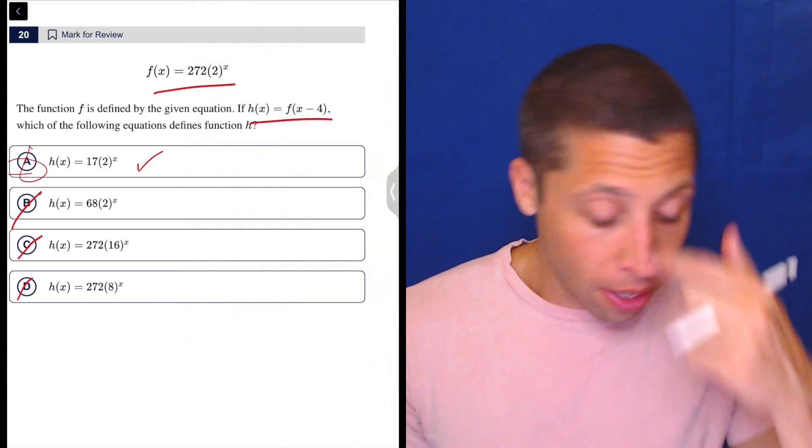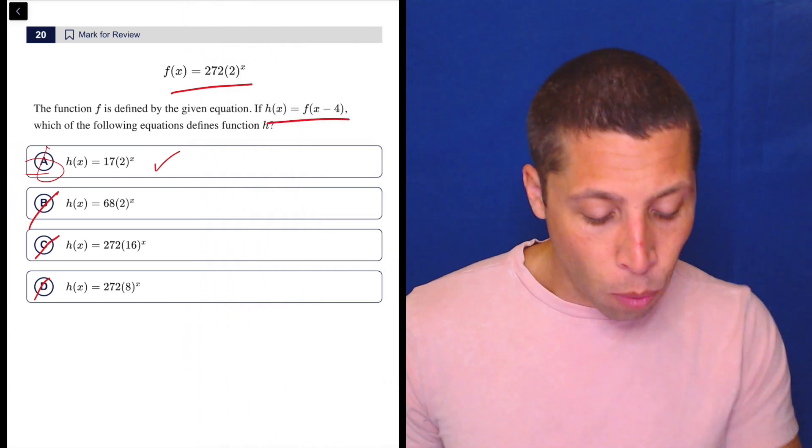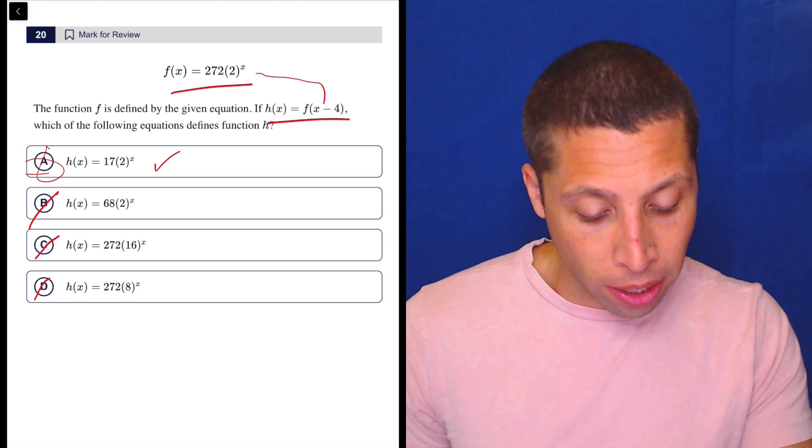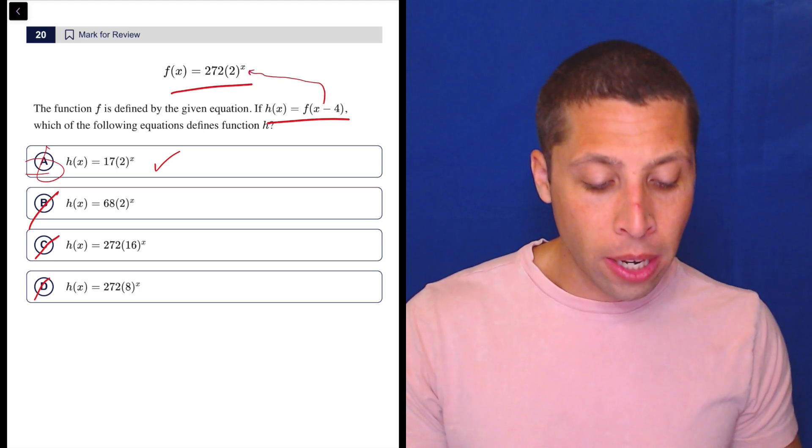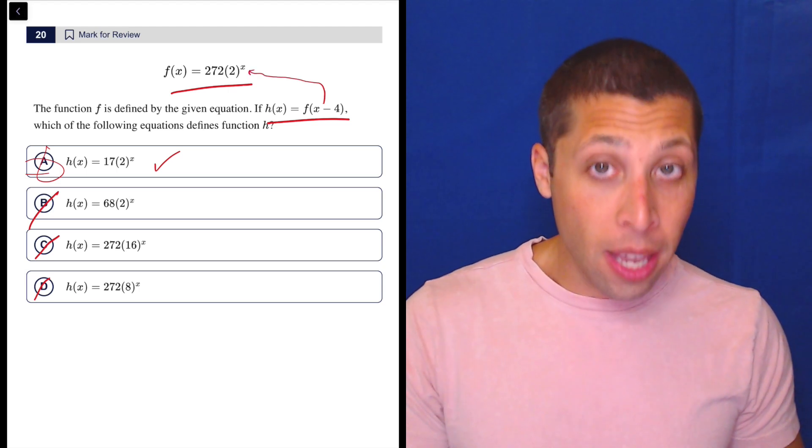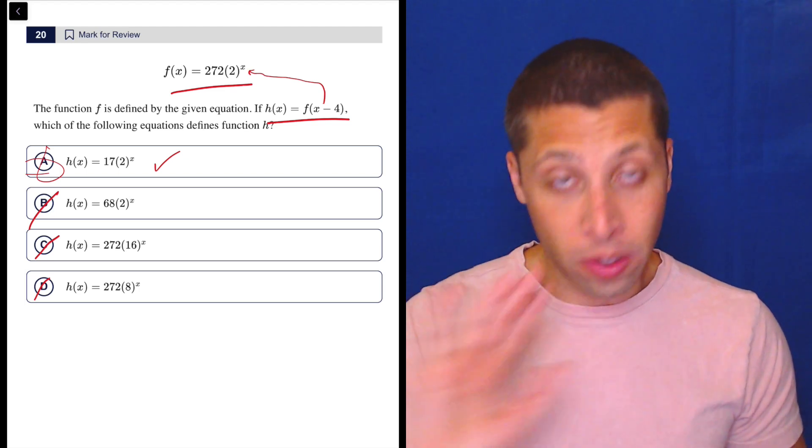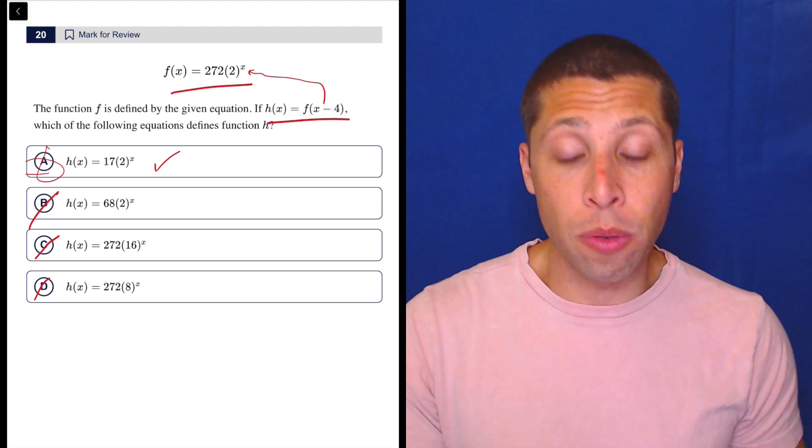Now, the reason I don't want to do this algebraically is watch what happens. In order to follow this instruction, what we need to do is we need to put x minus 4 in for the x in the f of x equation. Now, for some of you, that's already weird, but you need to know how to do that.